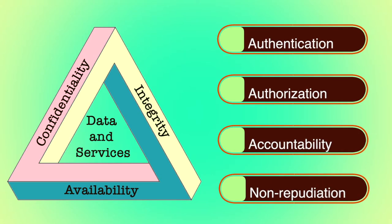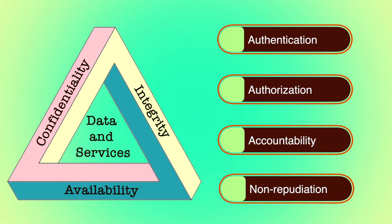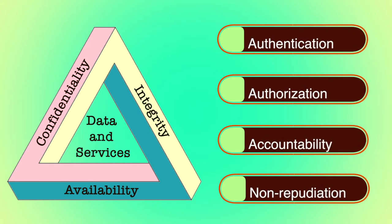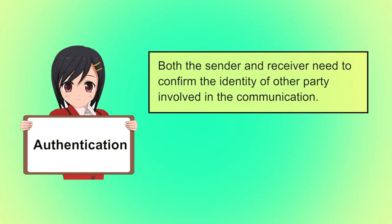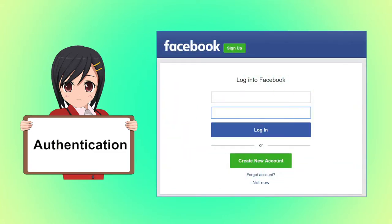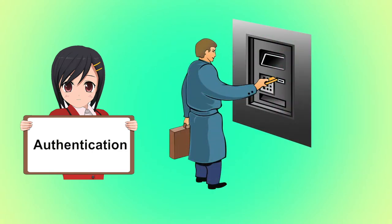Although the CIA triad is well established, some in the security field feel that additional concepts are needed. Four most commonly mentioned are authentication, authorization, accountability and non-repudiation. Authentication is the process of verifying that the identified user is the real owner of his or her identity. For example, to access your Facebook account, you should enter a valid ID and password. Your ID and password prove your authenticity. Another example: after swiping an ATM card, the user enters his secret PIN, and once entered, the user is authenticated to perform the desired transaction.